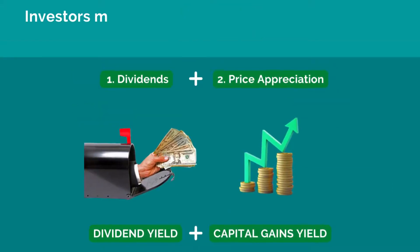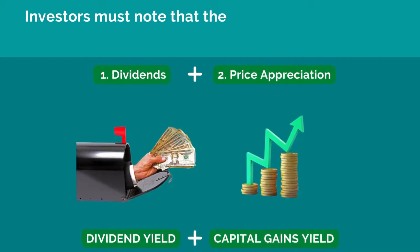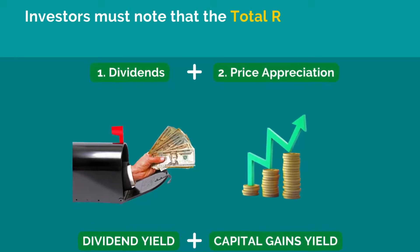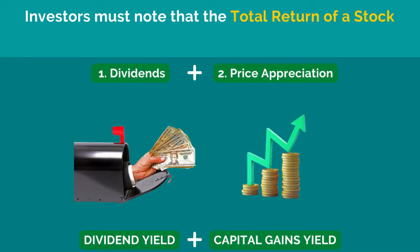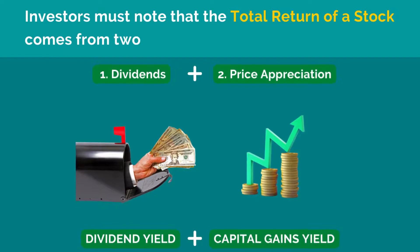Investors must note that the total return of a stock comes from two sources: one, dividends, and two, share price appreciation. Essentially, the total returns of a stock is dividend yield plus capital gains yield.